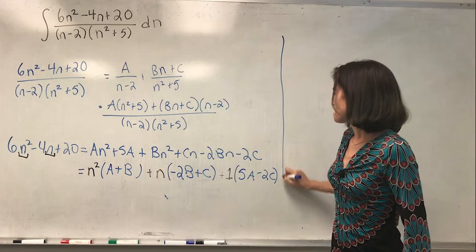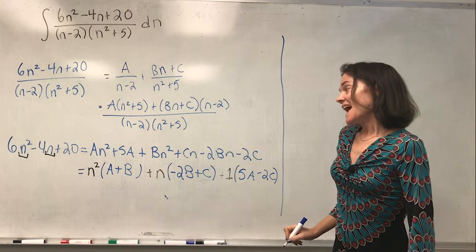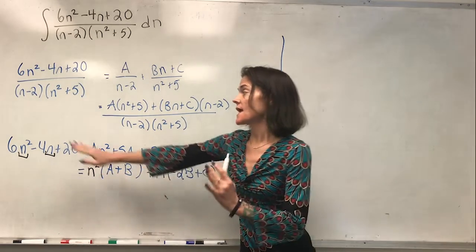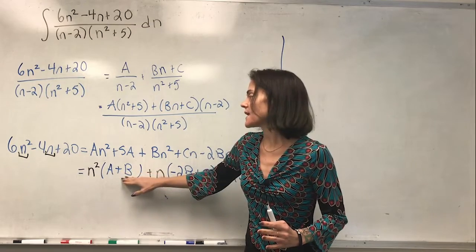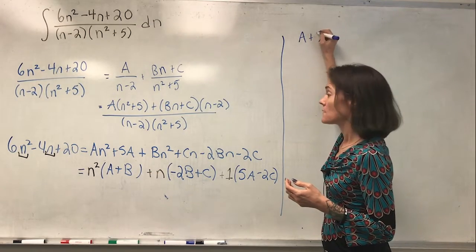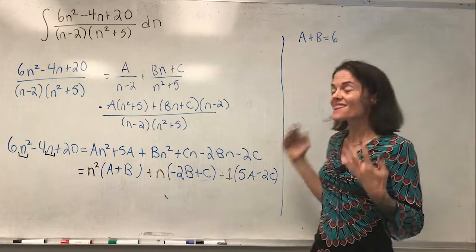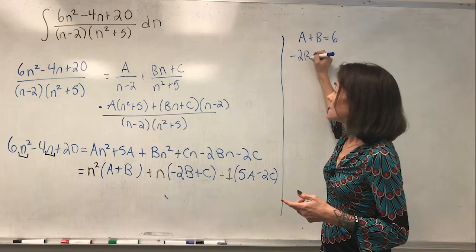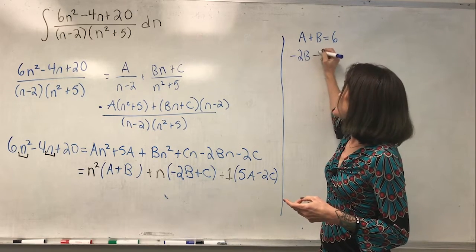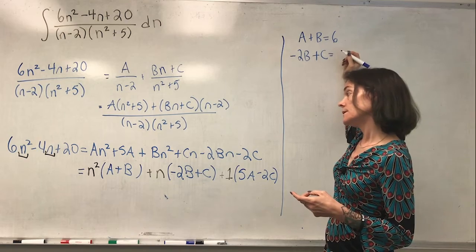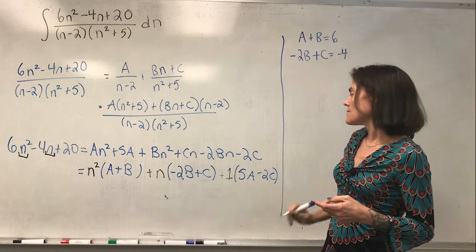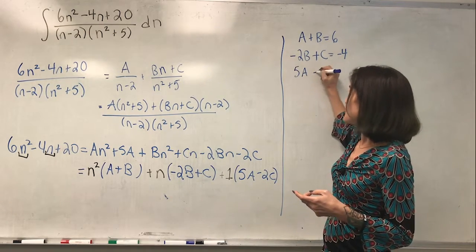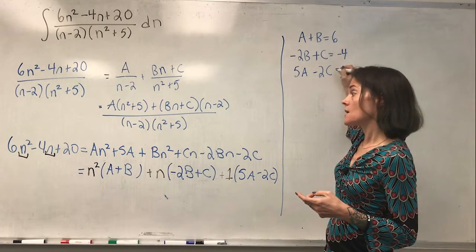At this point we may equate everything on the left-hand side in front of n squared with the right: A plus B equals 6. Then equating coefficients in front of n: minus 2B plus C equals minus 4. Finally, equating the constant coefficients: 5A minus 2C equals 20.